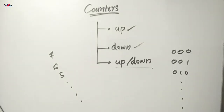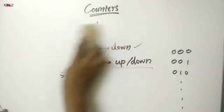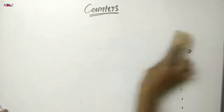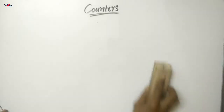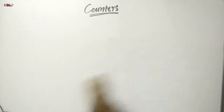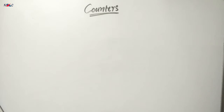Now let's see the applications of these counters. Counters can mainly be used to count the clock pulses. As the name implies, a counter is a circuit used to count the clock pulses applied at its input — one clock pulse generates a specific output — thereby counting the number of clock pulses applied at its clock input.